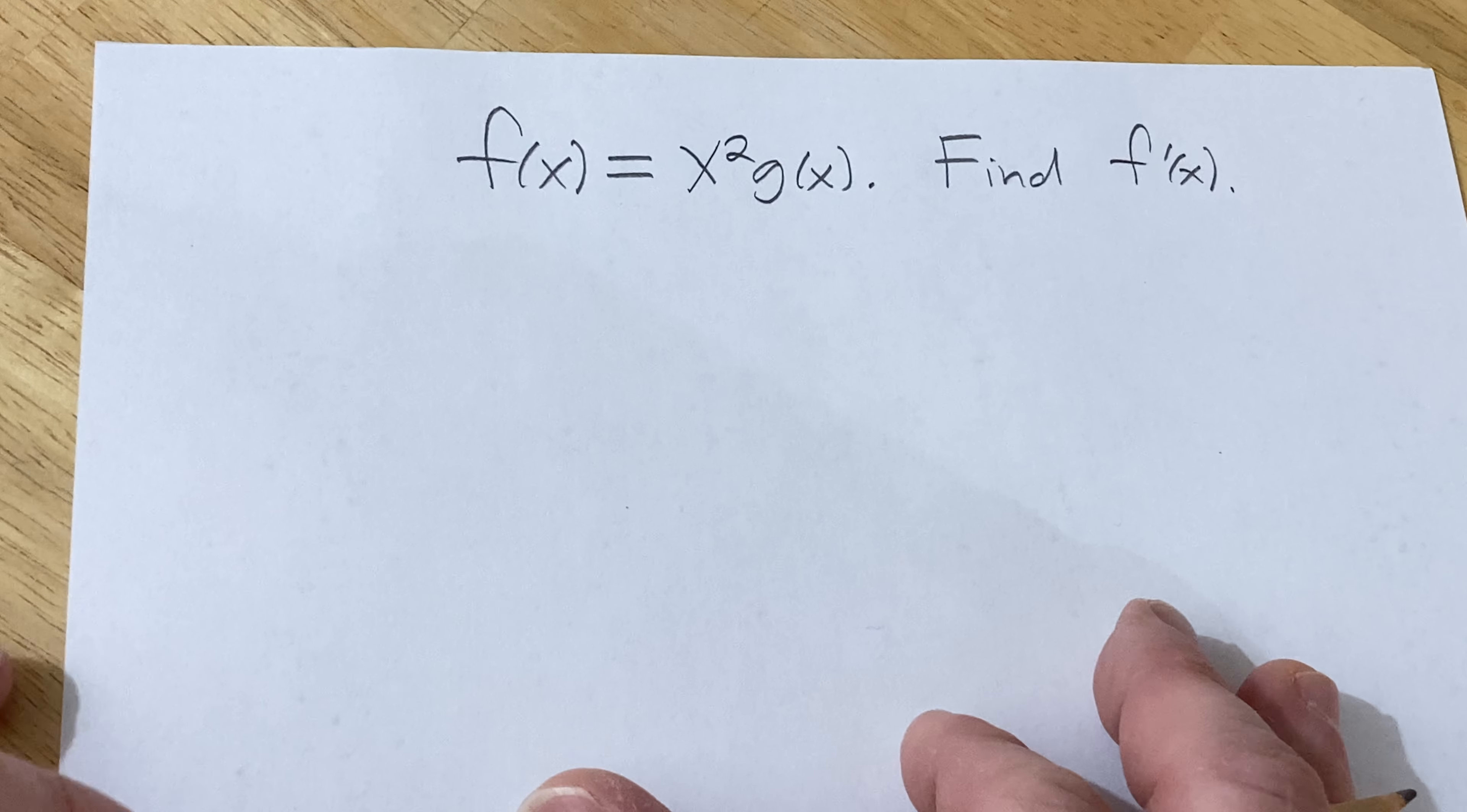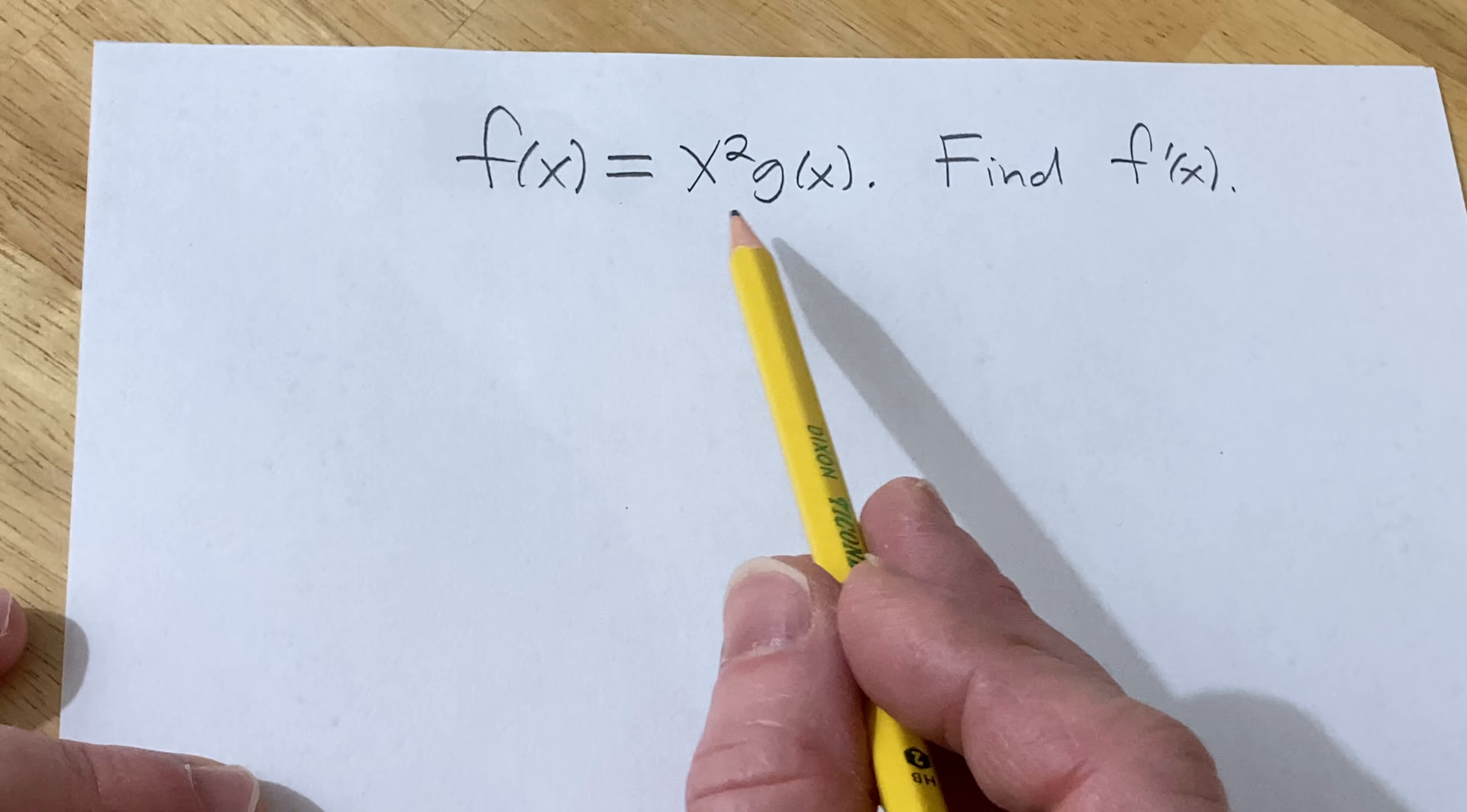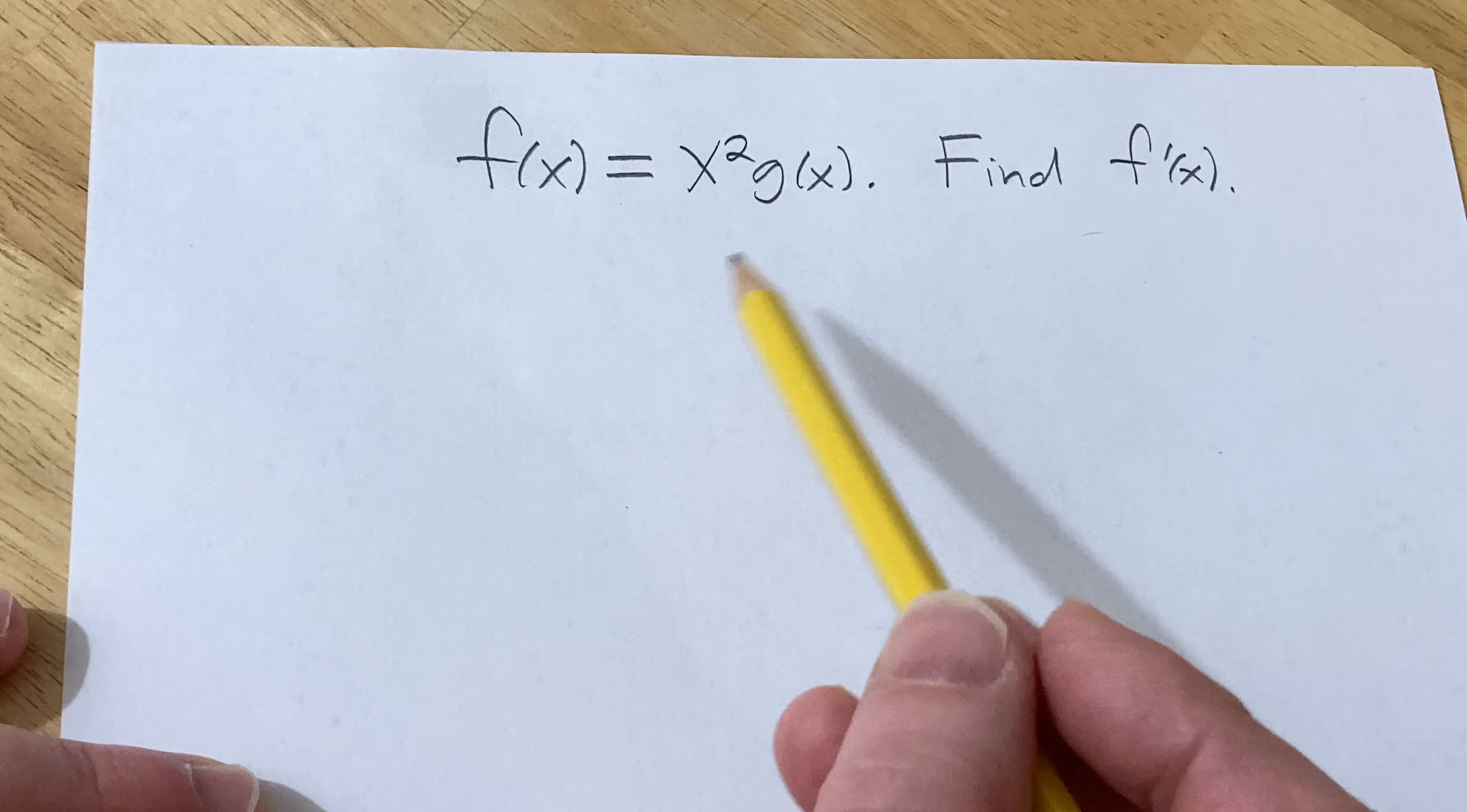Hi, in this video we're going to find the derivative of this function. We have f of x equals x squared times g of x and we have to find f prime of x.